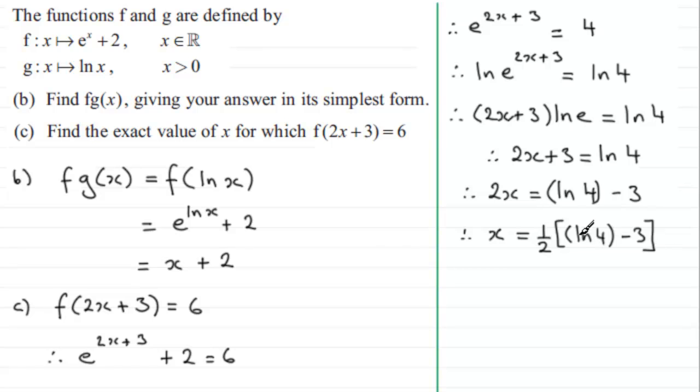I could have written it all over 2, but I decided to write it like this because I can now multiply each term by a half, I should say, and that will give me a half natural log of 4, okay, minus 3 over 2.